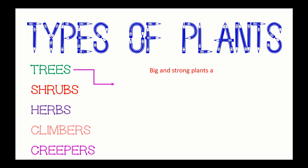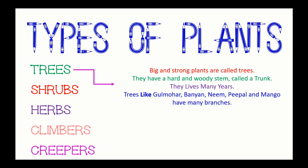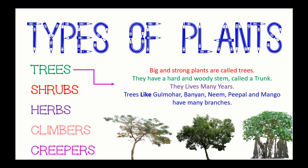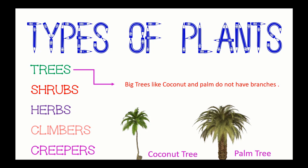First we will talk about trees. Big and strong plants are called trees. They have a hard and woody stem called a trunk and they live many years. Trees like gulmohar, banyan, neem, peepal, and mango have many branches, as you can see through the images. But in some cases, trees like coconut and palm do not have branches, as you can see through the picture.